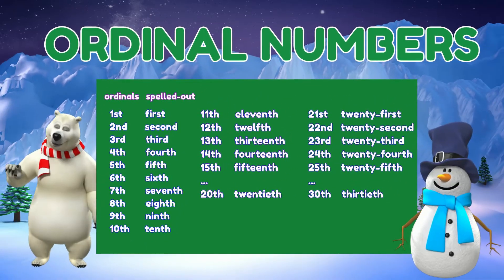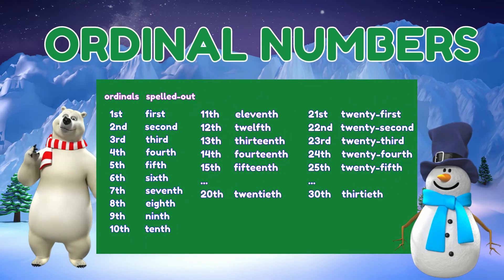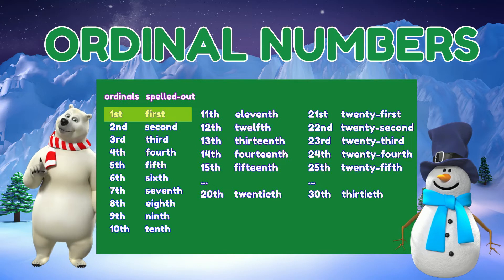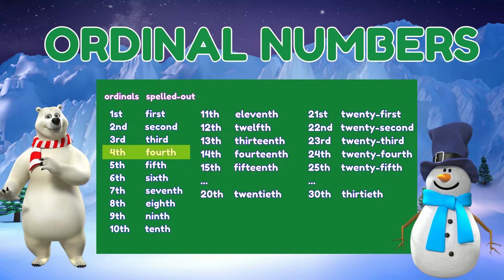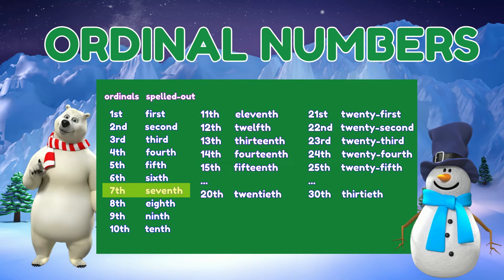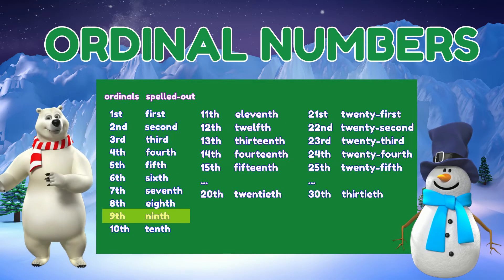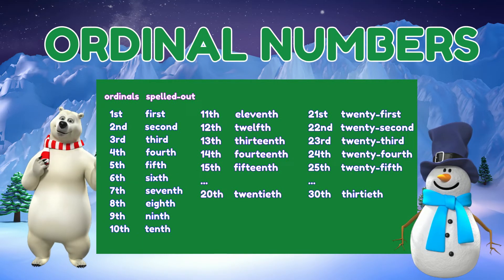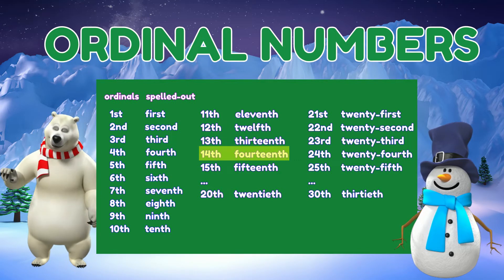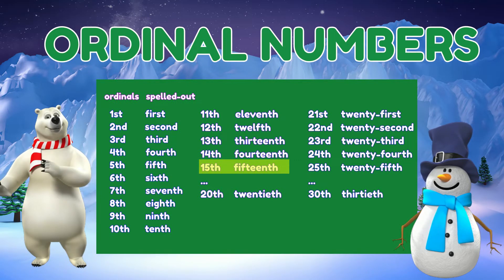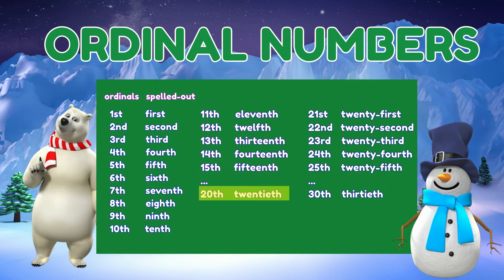Let's read our list of ordinal numbers here: first, second, third, fourth, fifth, sixth, seventh, eighth, ninth, tenth, eleventh, twelfth, thirteenth, fourteenth, fifteenth, and so on up to twentieth.